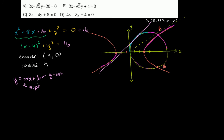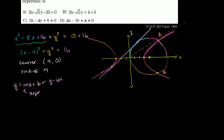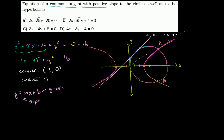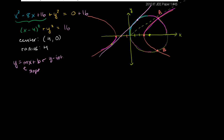We have y equals mx plus b as the equation of the line. The circle equation is x squared plus y squared minus 8x equals 0. So what we can do is substitute this expression in for y, and then figure out what are the constraints on m and b so that we only have one solution to the intersection, where we only intersect at one point.